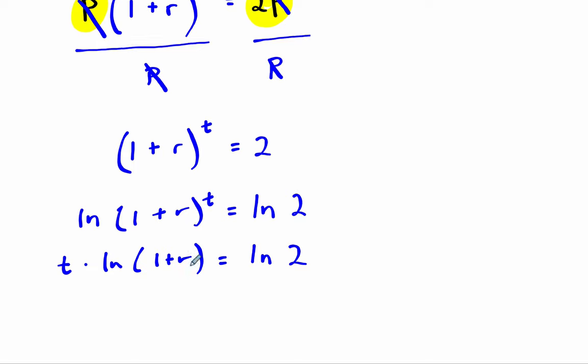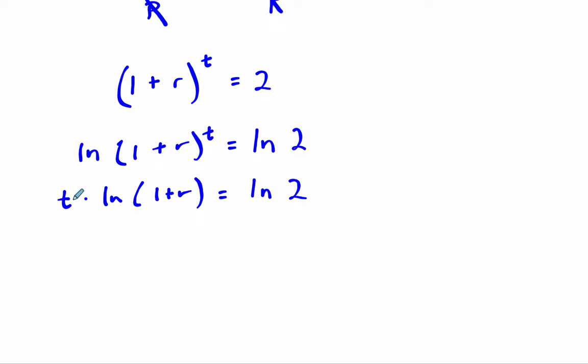So we get time times the natural log of 1 plus r equals the natural log of 2. We've got this all set up now. We want to solve for time. So even if we're shaky with natural log, but time times this stuff equals natural log of 2. So how do we get time by itself? We would divide the natural log of 2 by this piece right here. The natural log of 2 divided by the natural log of 1 plus r.